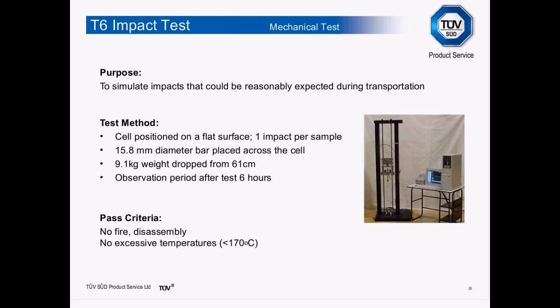The T6 impact test applies to cells only. The cell is positioned on a flat surface and a metal bar of 15.8 mm diameter is placed across it. A 9.1 kg weight is dropped from a height of 61 cm onto the cell — only one impact per cell. Six hours after the test, pass criteria require no fire and no disassembly; the cell enclosure temperature must not exceed 170°C during the entire test.